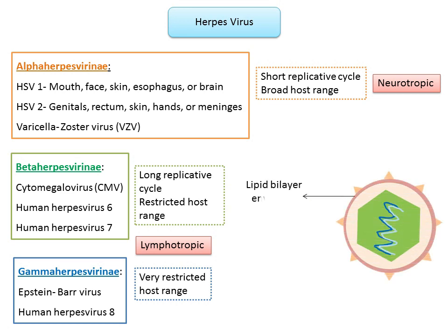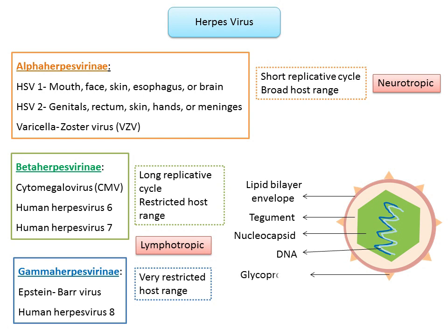On the right side you can see the diagram of a herpes virus. The outer layer is the lipid bilayer envelope, beneath which is the tegument. Enclosed inside is the nucleocapsid with DNA, and on the surface there are glycoprotein spikes.